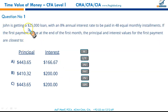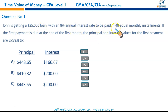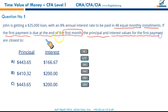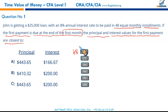John is getting a $25,000 loan with 8% annual interest rate to be paid in 48 equal monthly installments. If the first payment is due at the end of the first month, the principal and interest values for the first payment are closest to — now in this case since there are 48 payments, N is going to be 48.